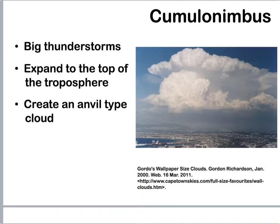Next up we have cumulonimbus clouds — one of my favorites to watch as they develop. These are your big thunderstorm clouds. Cumulonimbus clouds tend to form in unstable atmospheric conditions, where an air parcel that is rising will continually get warmer than the surrounding environmental air, aiding it in moving up even farther. This creates strong updrafts that can produce what's called an anvil cloud at the top. These are the clouds that can exceed and punch through the troposphere into the stratosphere if updrafts are strong enough.